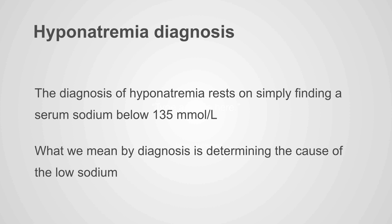Hyponatremia diagnosis. The diagnosis of hyponatremia is really trivial — all you need is a blood test with a sodium less than 135. But usually when people ask about diagnosis, they mean the etiology: what is driving that low sodium? We can use an algorithmic approach to get that answer.